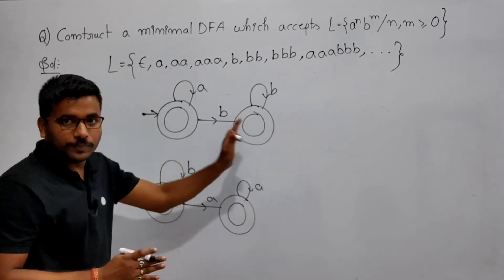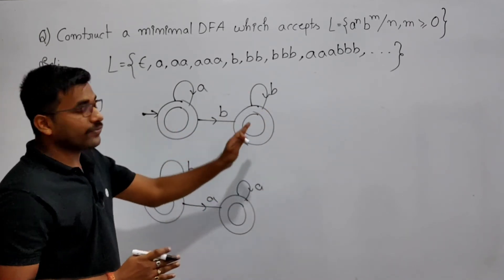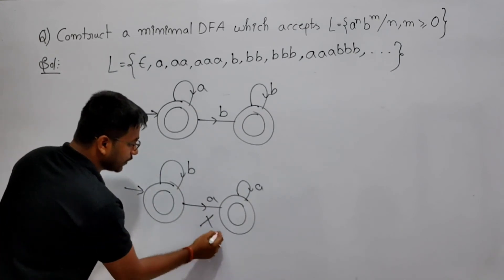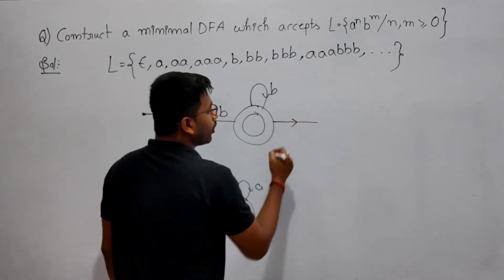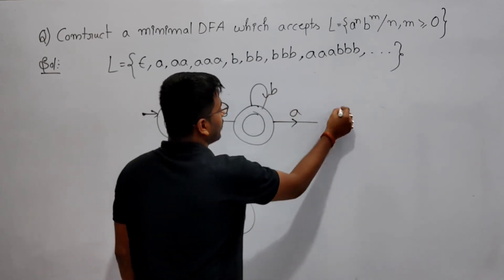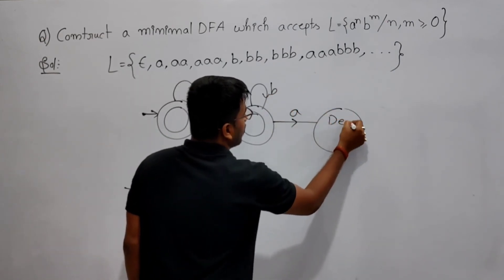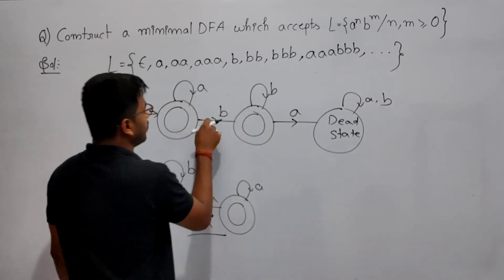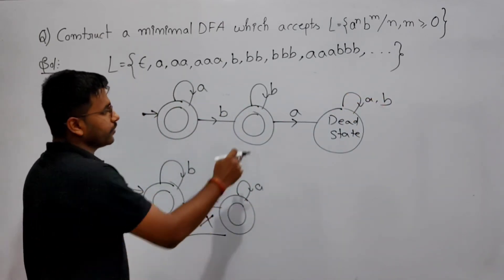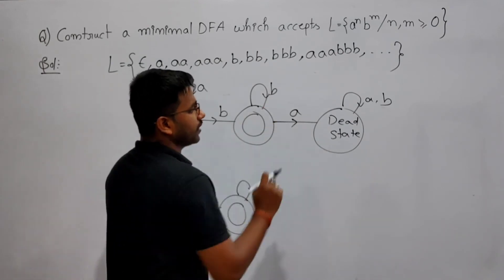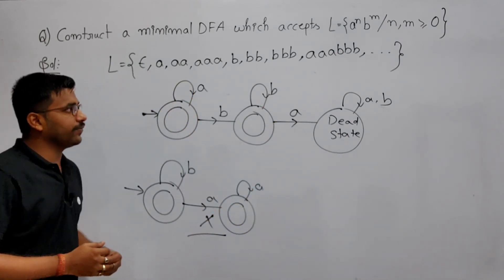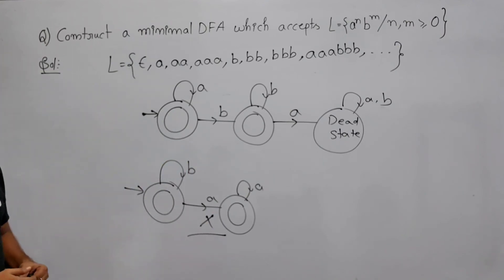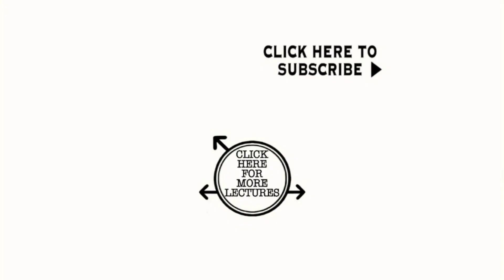After 'b', there should be no 'a'. So if we receive an 'a' after 'b', we go to a dead state and reject. Any combination of 'a' or 'b' in the dead state is also rejected. All transitions for 'a' and 'b' are defined for each state, making this the minimal DFA for the language a^n b^m, where n, m ≥ 0.